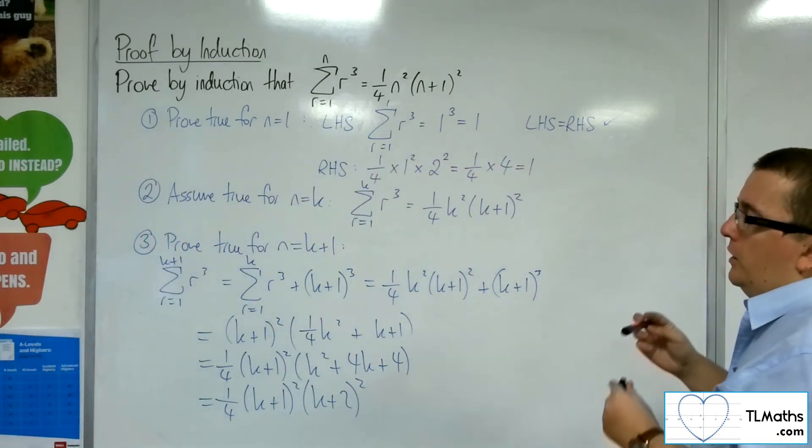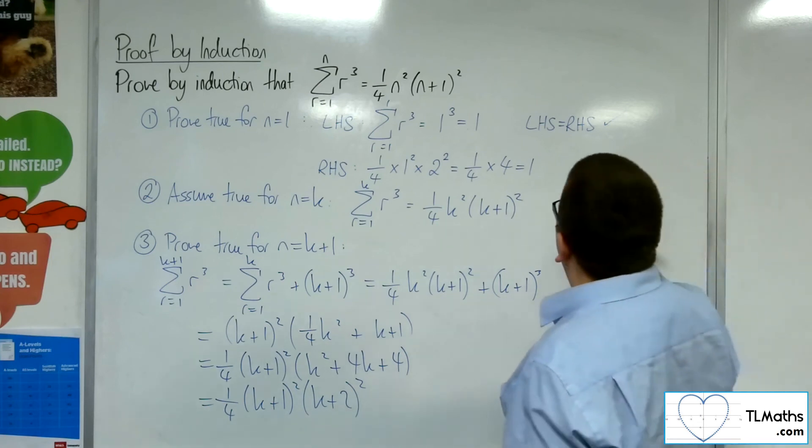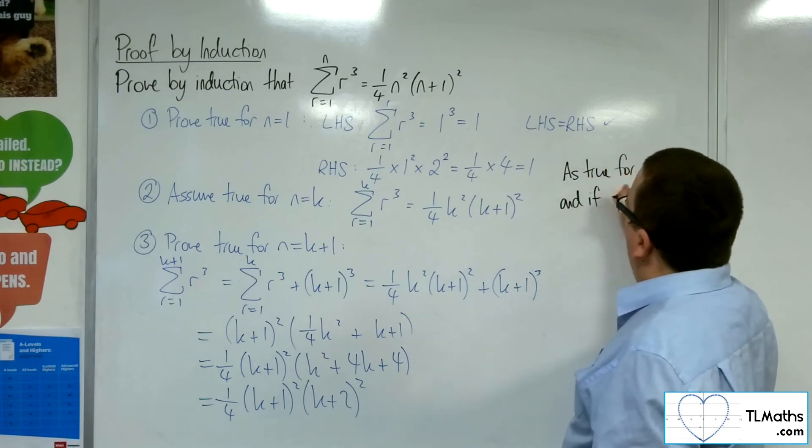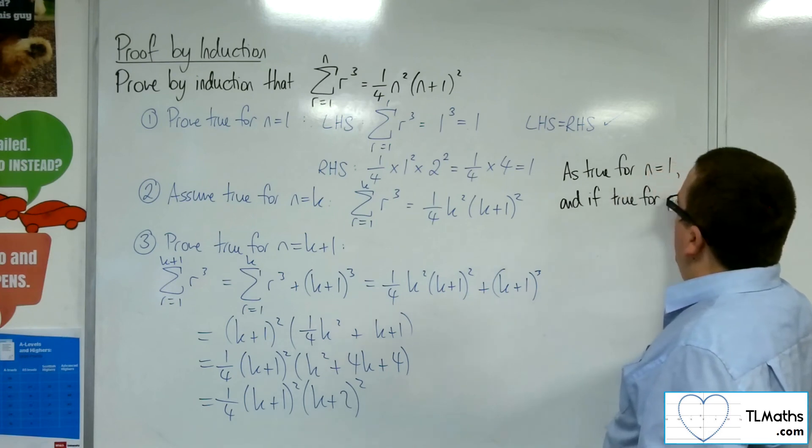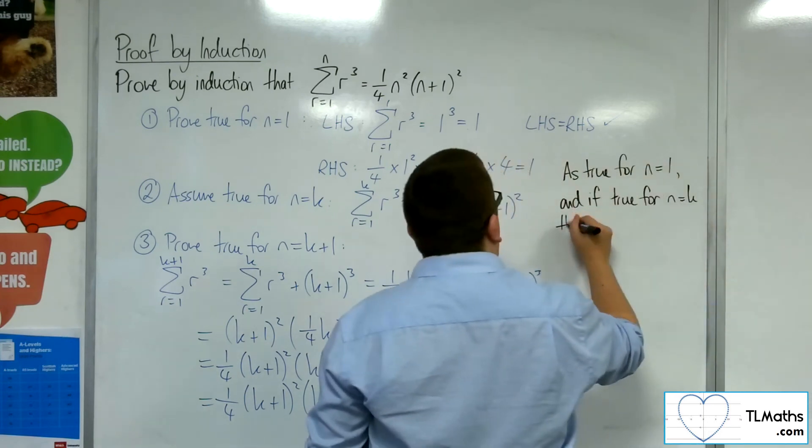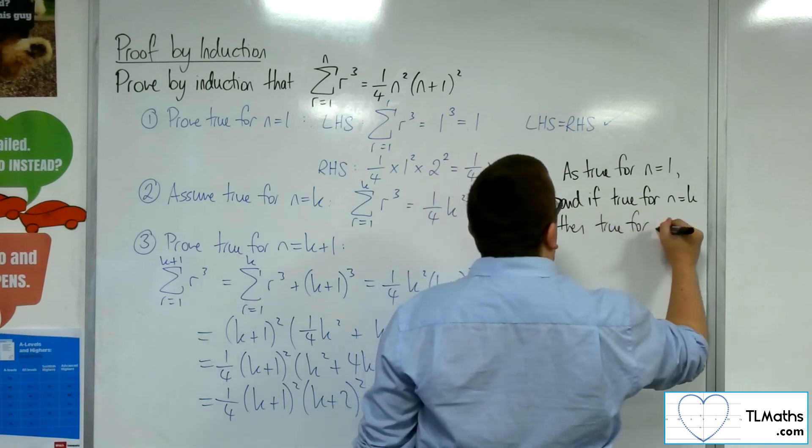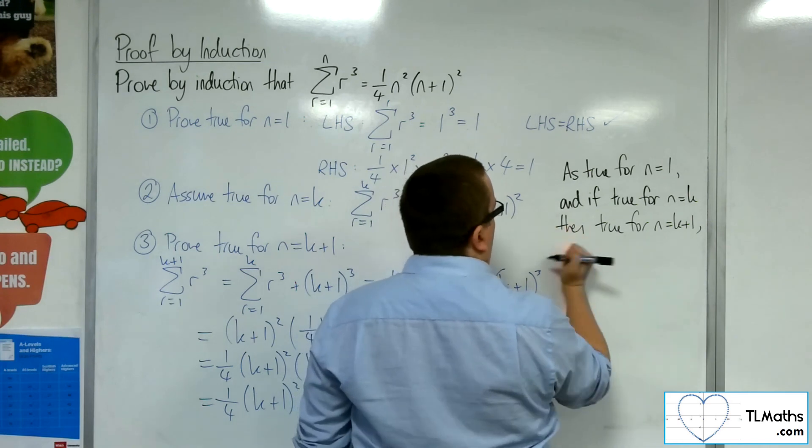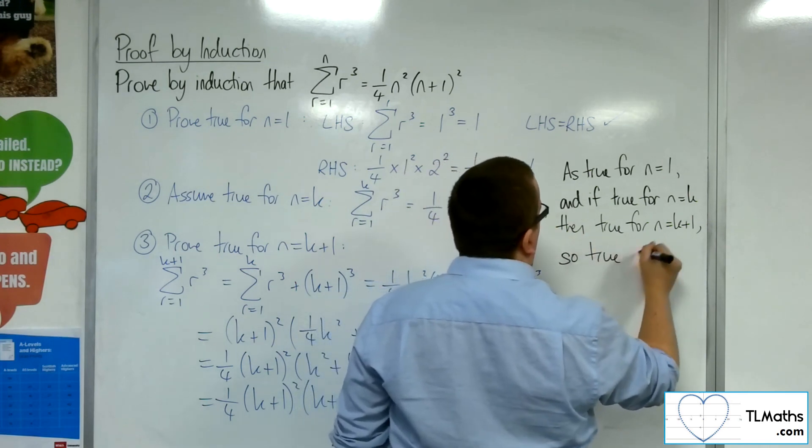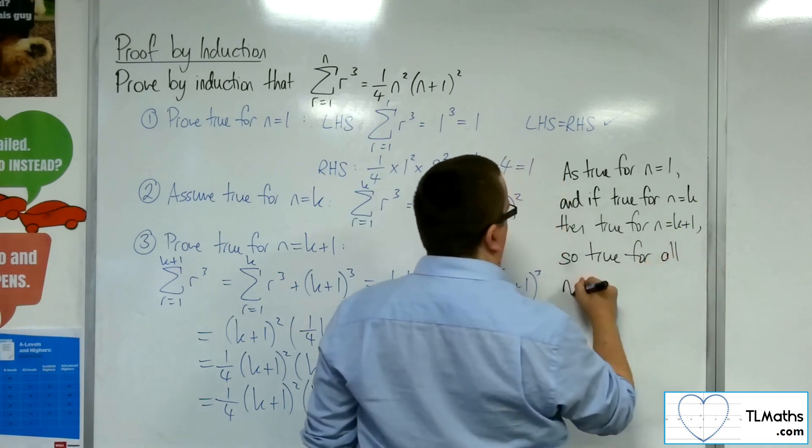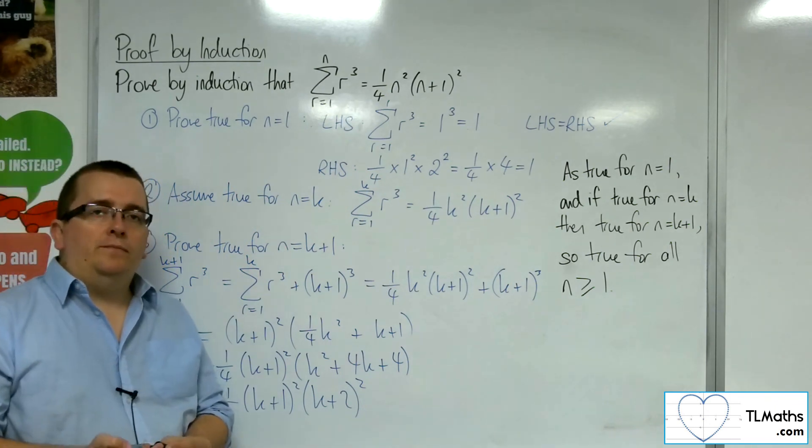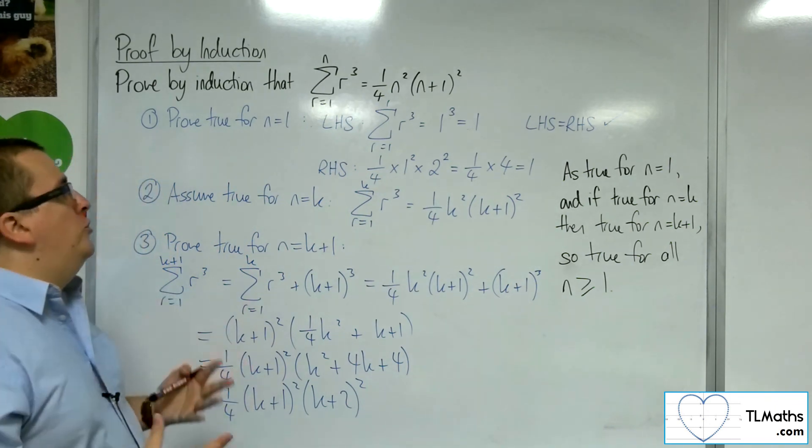Finally, the concluding statement. So, as true for n equals 1, and if true for n equals k, then true for n equals k plus 1. Well, I'll put so true for all n greater than or equal to 1. And that's my concluding statement. I have proved each of the stages required. And so this statement is true as shown by induction.